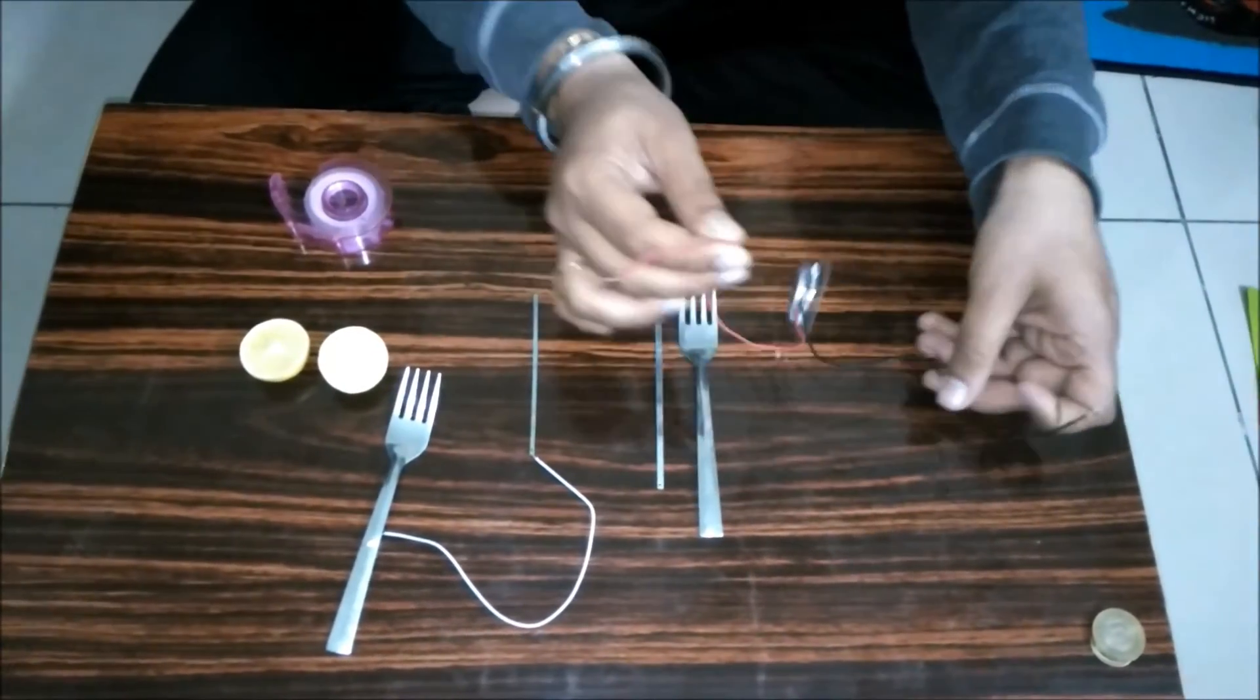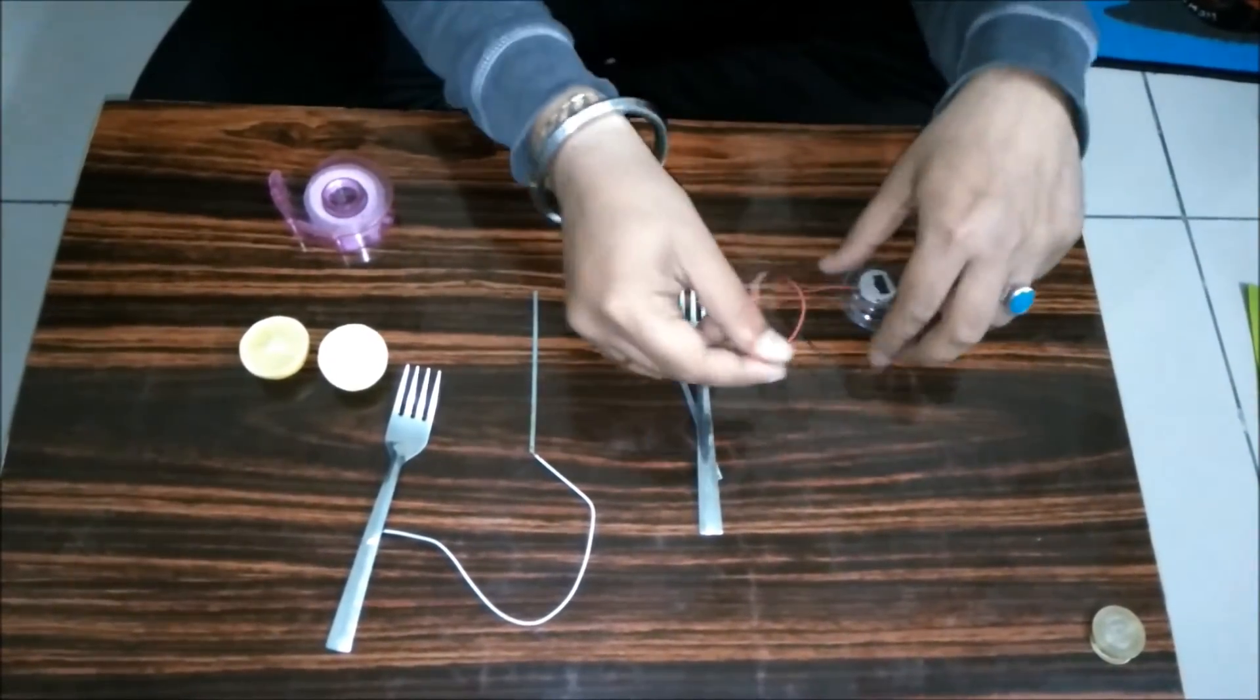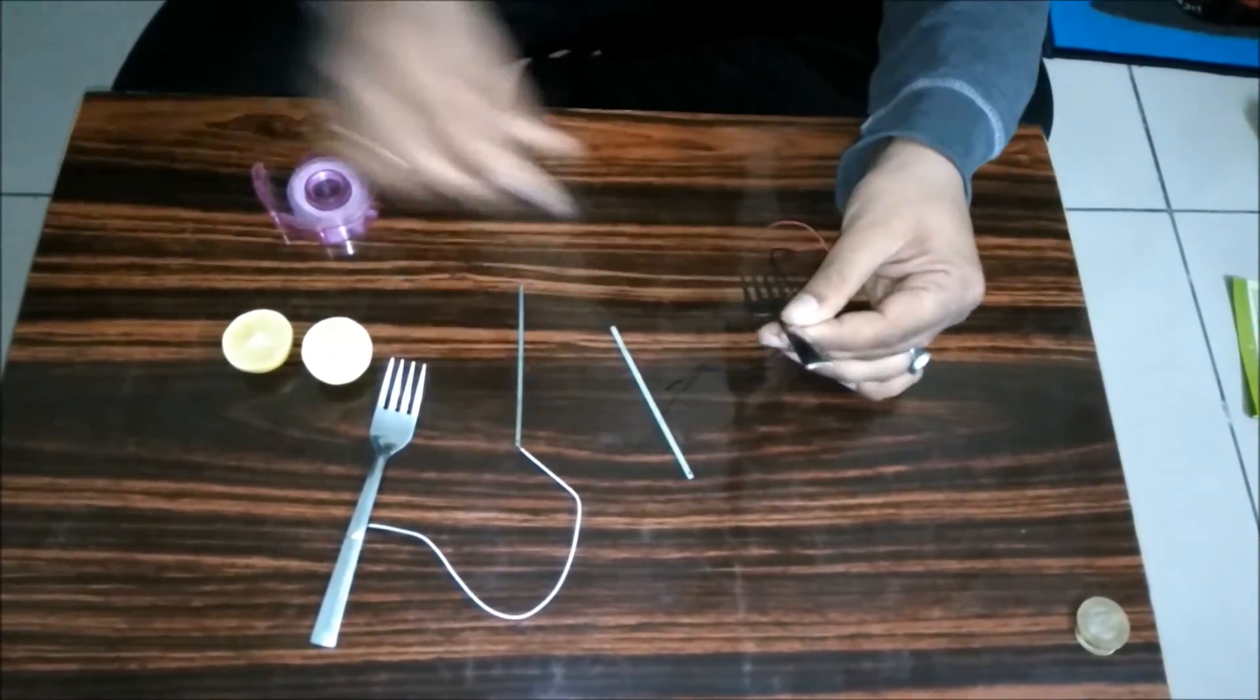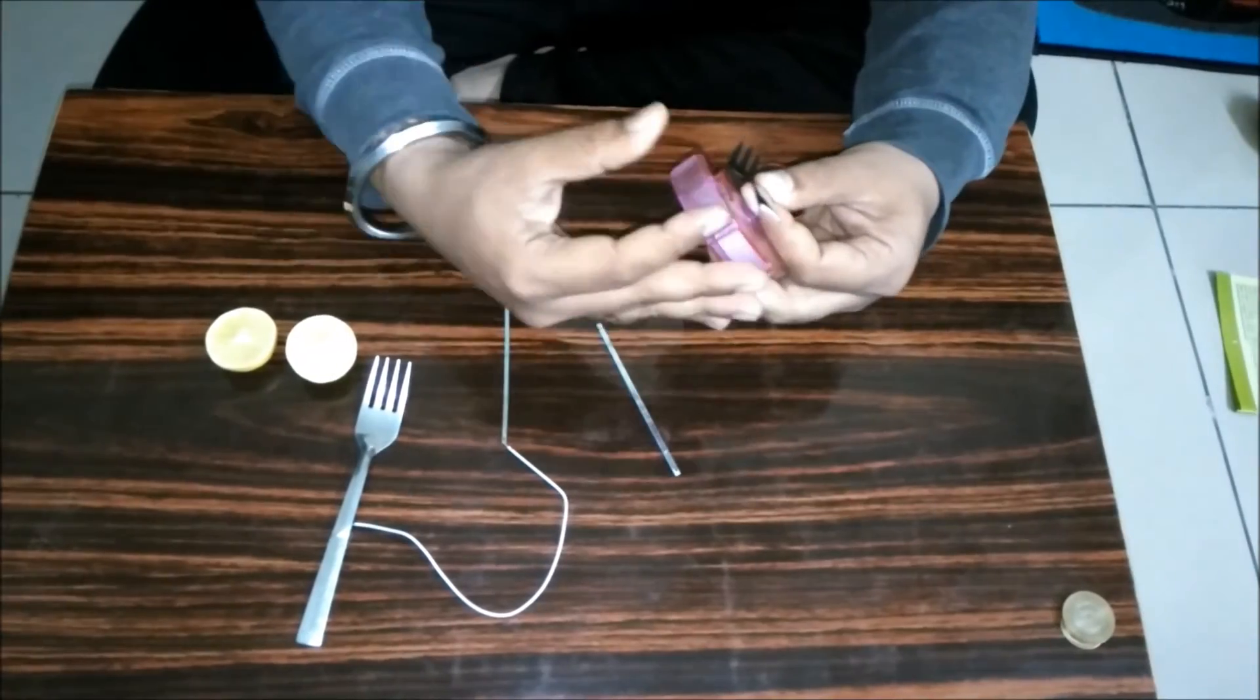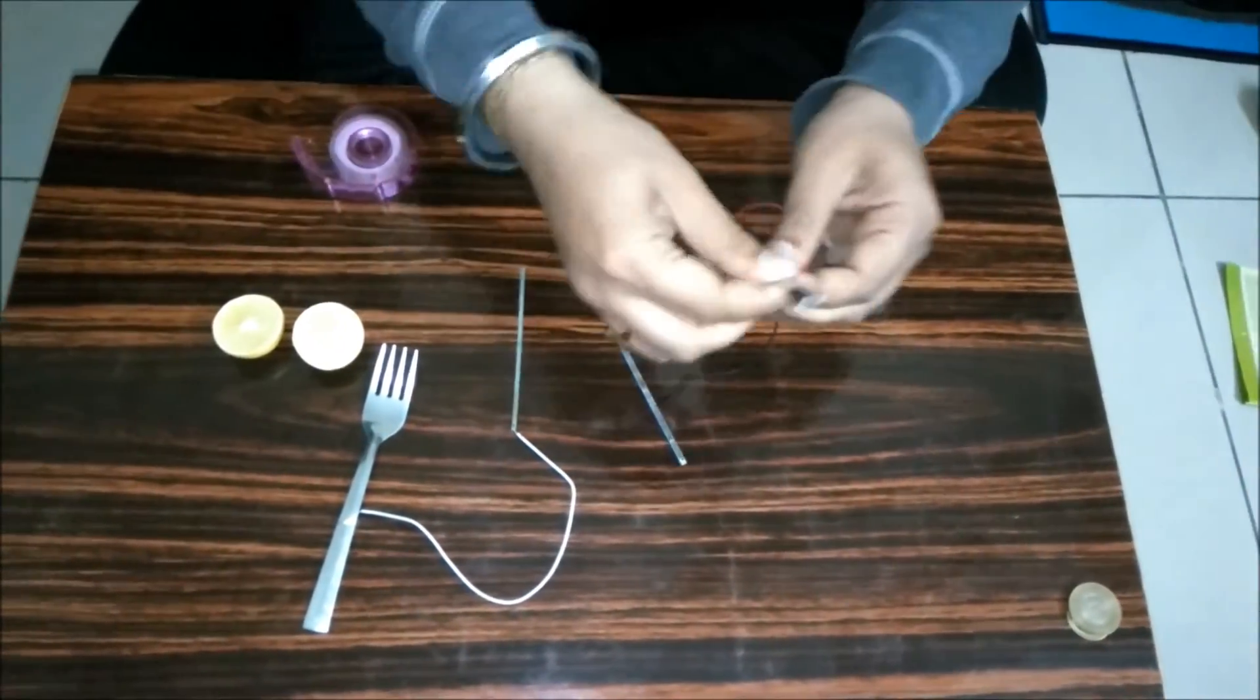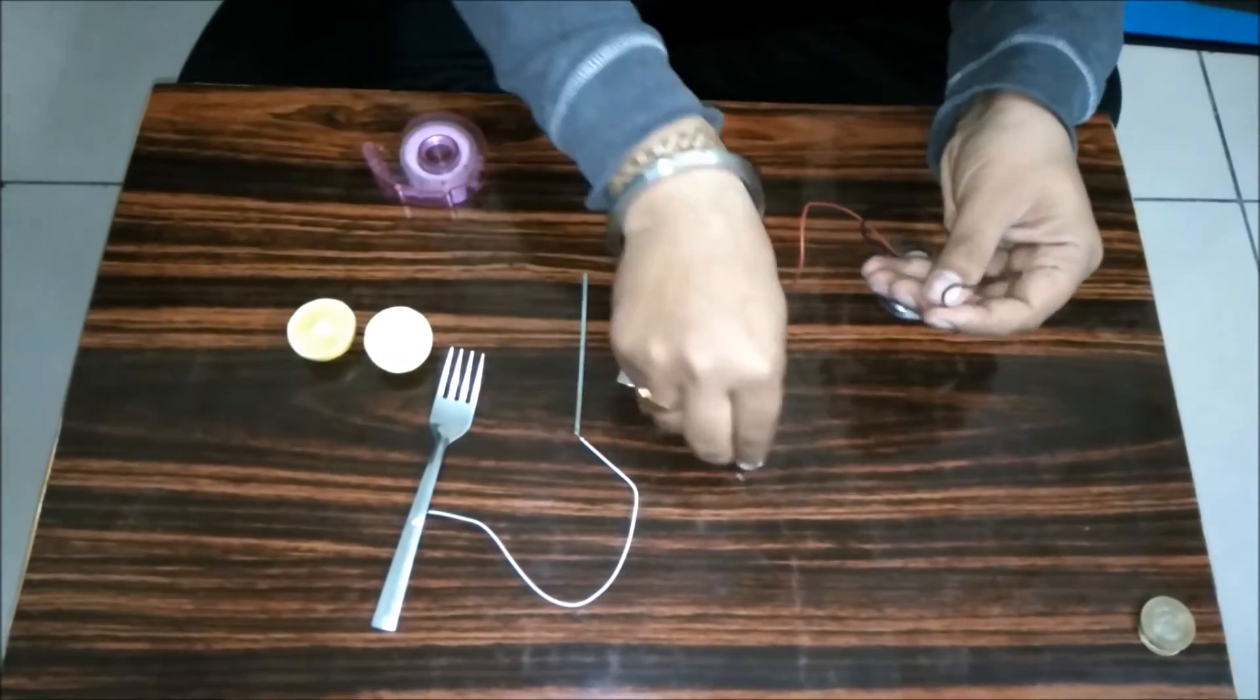Connect the red wire of digital watch with the fork and black wire with the zinc strip.